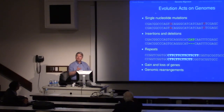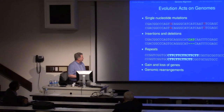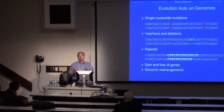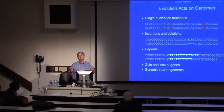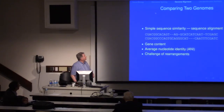We see varying repeats — for example, either four copies of CTT or five copies of CTT, giving different numbers of repeats. At a bigger scale in a genome, you can have a gain or loss of genes. And at the biggest level, you can have major rearrangements of the genome, where one part is moved to another part or reversed. Various things happen at a very large scale. Those large-scale rearrangements are kind of hard to get a handle on.